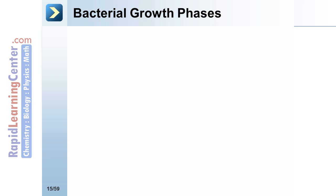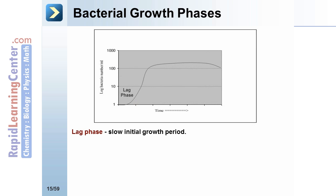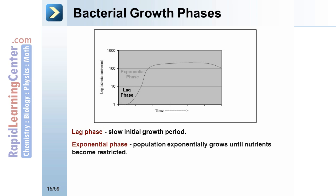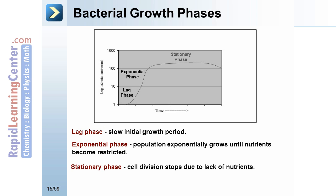Bacterial growth phases. Lag phase: slow initial growth period. Exponential phase: population doubles until nutrients become restricted. Stationary phase: cell division stops due to lack of nutrients. Eventually this will lead to death, and in the death phase the numbers of bacteria have decreased.